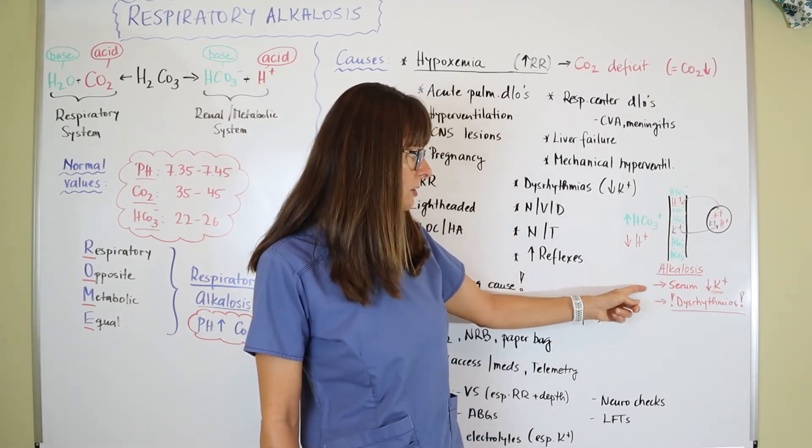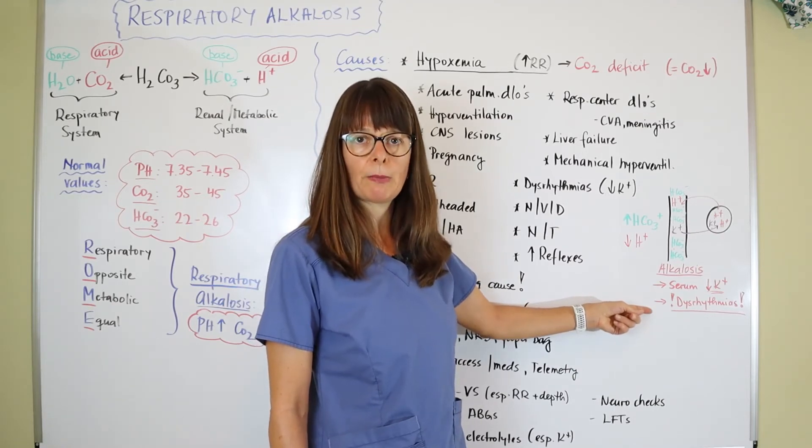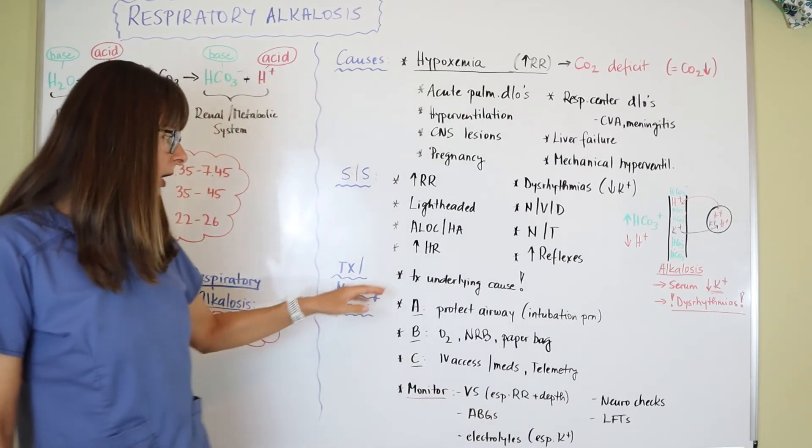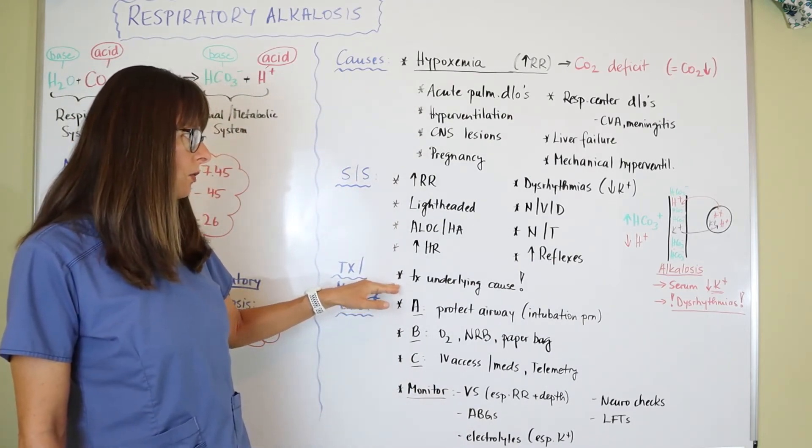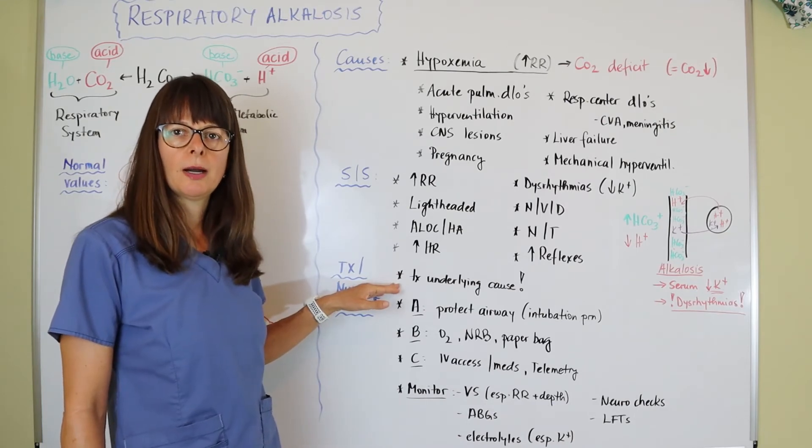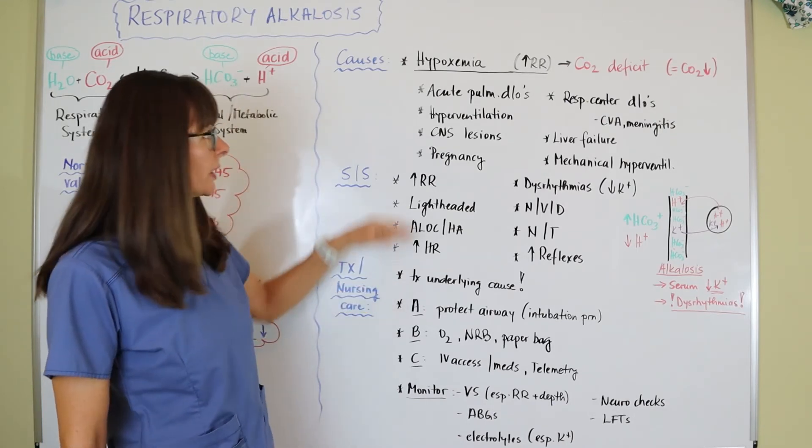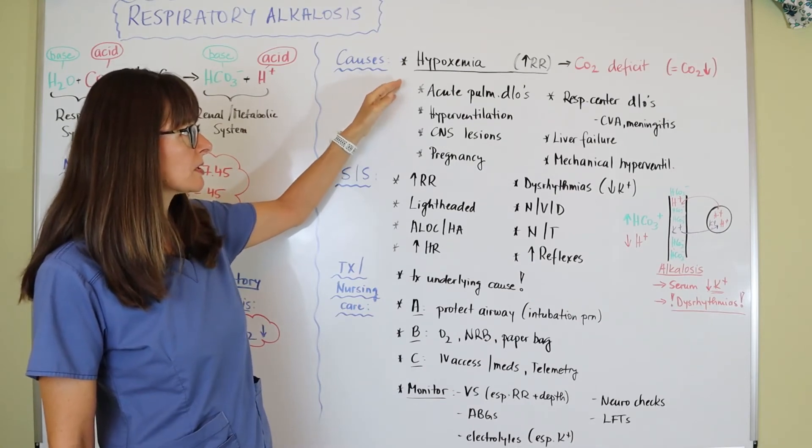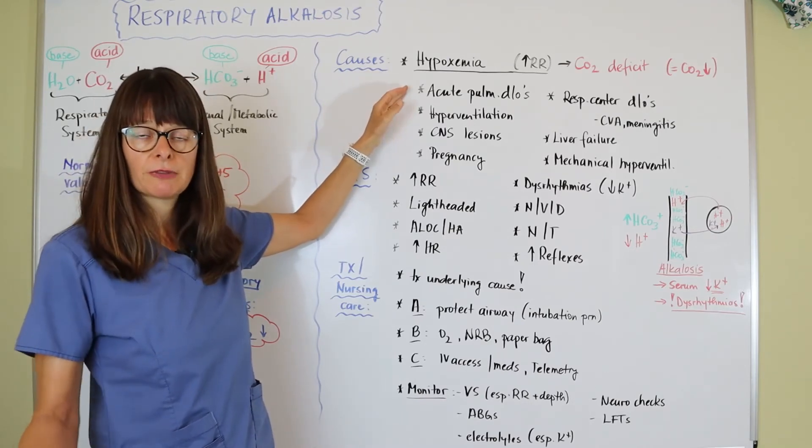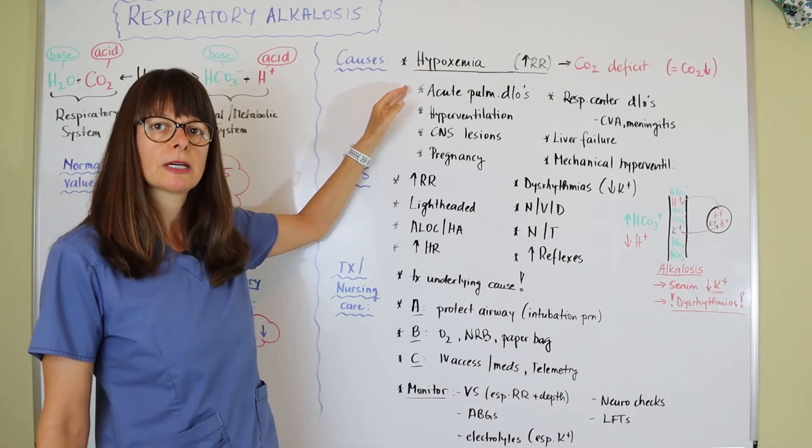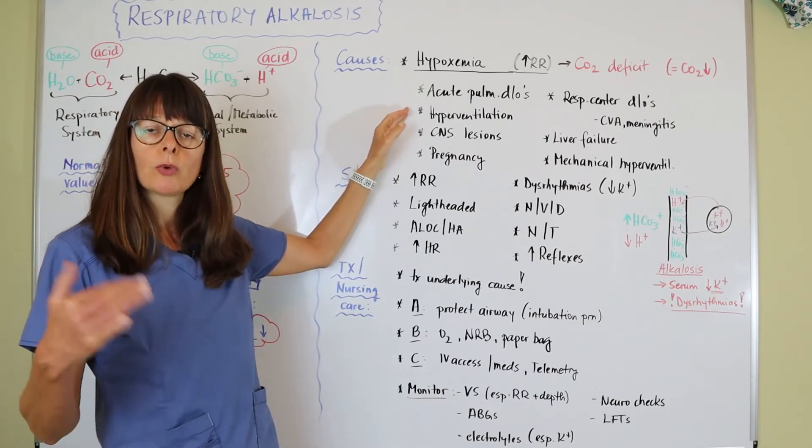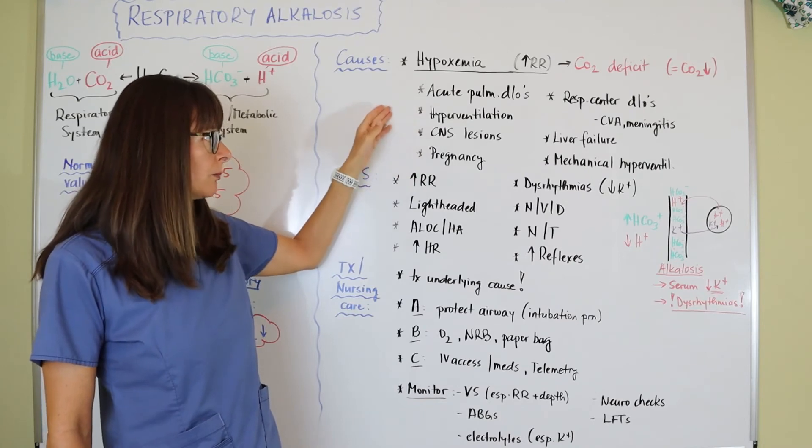Hence, alkalosis leads to serum low potassium, and as we know with potassium abnormalities, we always have to think about arrhythmias. For treatment, we always need to treat the underlying cause. No amount of hydrogen ion that we give the patient is going to help if we don't treat the underlying cause. If the patient is hypoxic, oxygen sounds like a good idea. For pneumonia, give antibiotics. For pulmonary embolism, dissolve that blood clot. For somebody having an anxiety attack, we coach them through deep breathing.